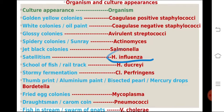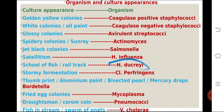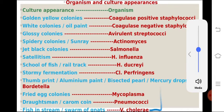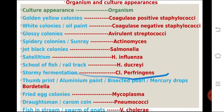H. influenzae is very famous for the satellitism phenomenon, which I will explain. School of fish or rail track appearance is seen with H. Ducreyi. Fish in stream or swarm of gnats is seen with Vibrio cholerae — you need to differentiate both: school of fish for H. Ducreyi, fish in stream for Vibrio cholerae. Stormy fermentation is a characteristic feature of Clostridium perfringens.